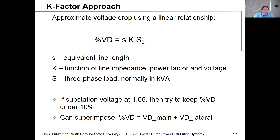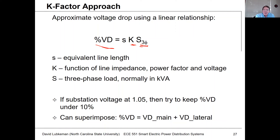This is a linearization where we make certain assumptions about the nature of the voltage drop to come up with simplified ways of doing voltage drop calculations. For this K-factor approach, we calculate a percent voltage drop across a system, which is a function of the K-factor multiplied by the net load KVA multiplied by an equivalent line length. Once you have a given K-factor and an equivalent load, the longer the line, basically the more voltage drop you're going to have, and we assume it's linearly related.